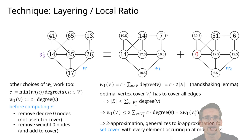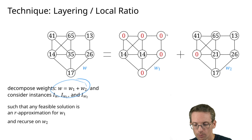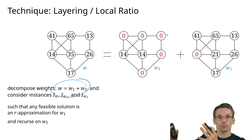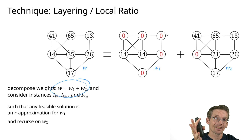What makes this version interesting is that it also generalizes to set cover — in the book this appears as the layering algorithm in the set cover chapter. It yields a k-approximation for set cover instances where every element occurs in at most k sets. To wrap up: we've seen the local ratio / layering technique, based on decomposing the weight function so that w1 gives an r-approximation for any feasible solution, then iterating on w2 to get an r-approximation overall.